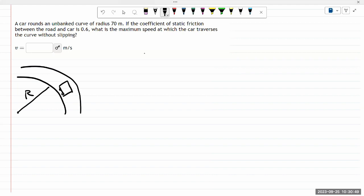If the coefficient of static friction between the road and the car is dead. Okay, interesting. What is the maximum speed at which the car travels to the curve without sleeping? Okay, so having read the question and realizing what information it's asking,